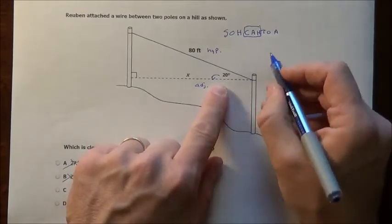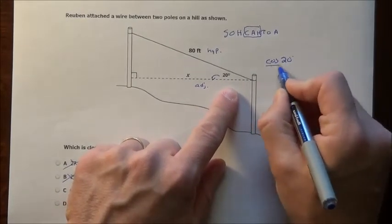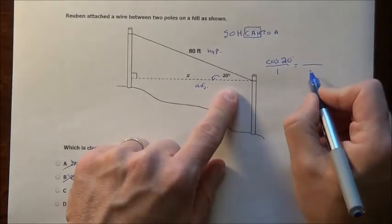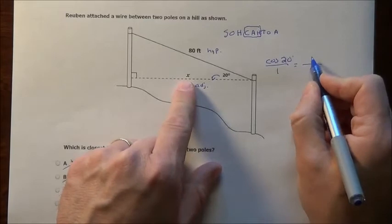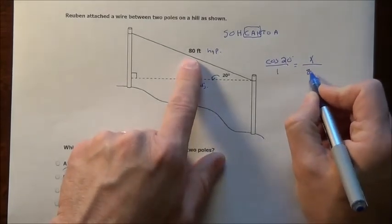So we're going to do the cosine of this angle, cosine of 20 degrees. I'll put it over 1, equals the adjacent divided by the hypotenuse. Well the adjacent measurement we don't know, so we put x over the hypotenuse, they gave us as 80.